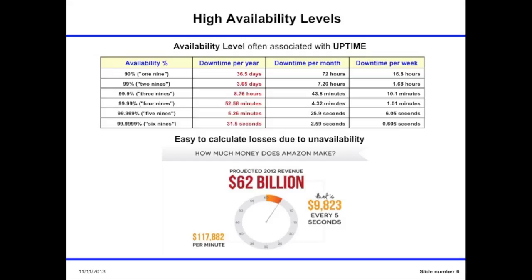Why do people use those levels? Because it is very easy to calculate losses. Amazon makes about $100,000 per minute, so 40 minutes of downtime in August means an obvious number of losses. That's why people are interested in high availability — and interestingly, that failure was caused by one mistake of one new person.